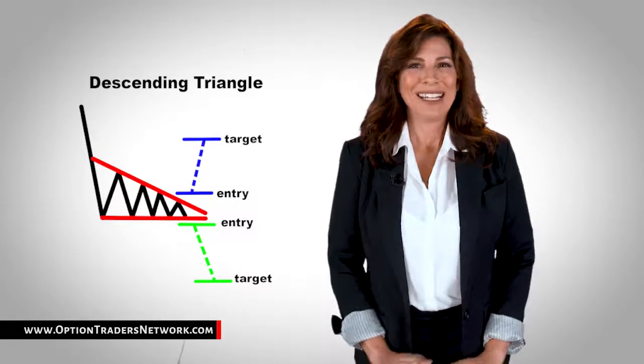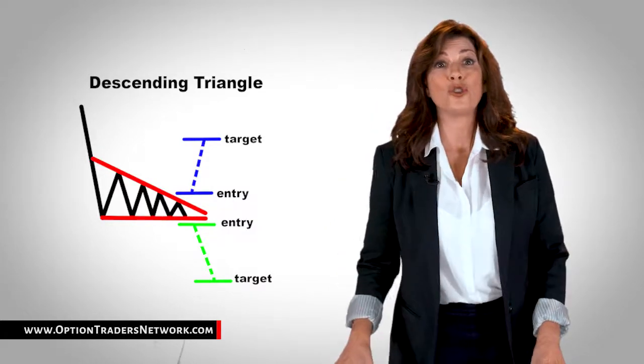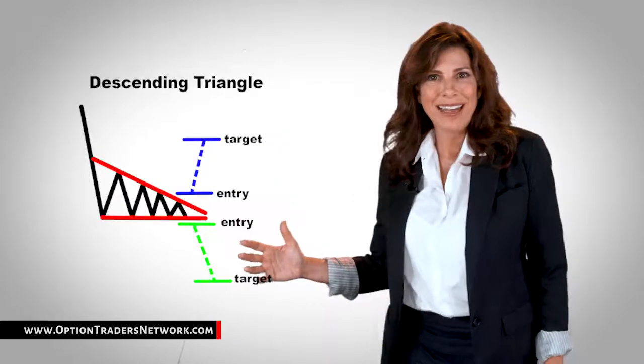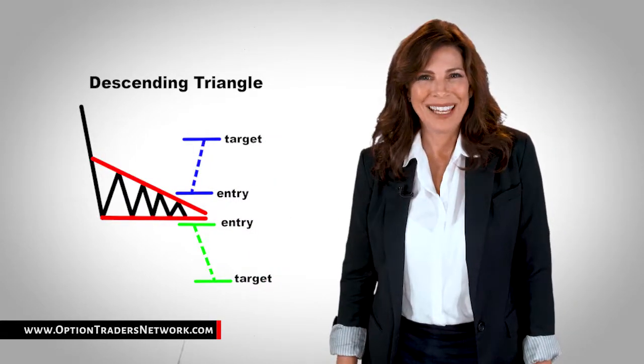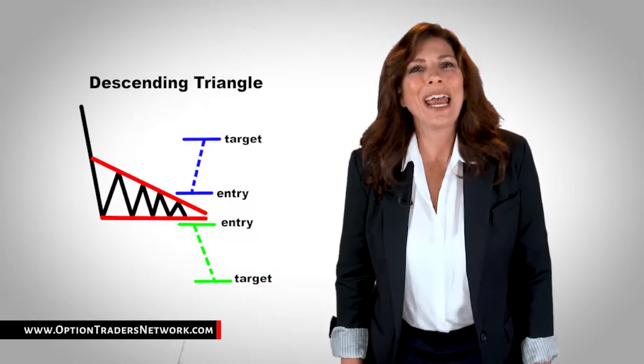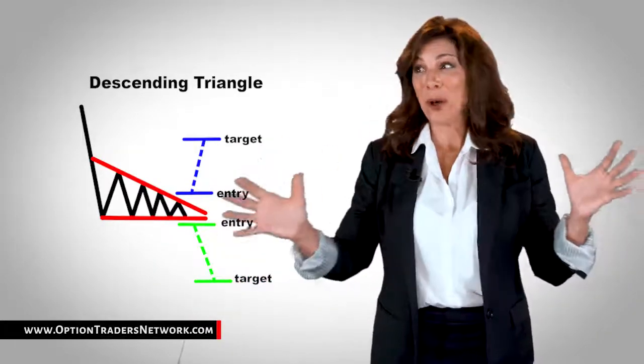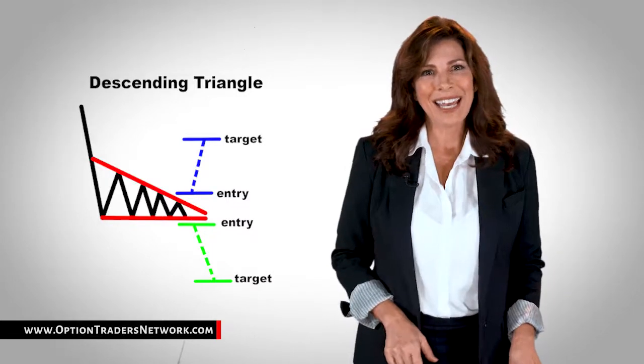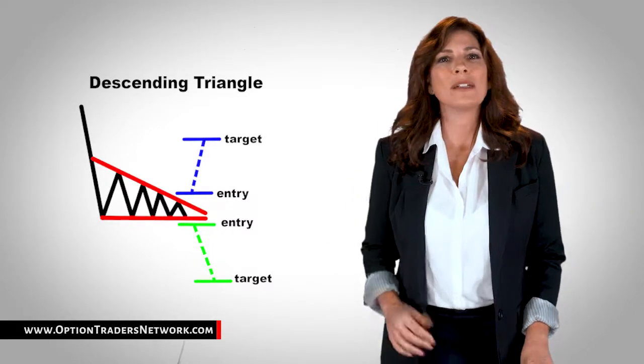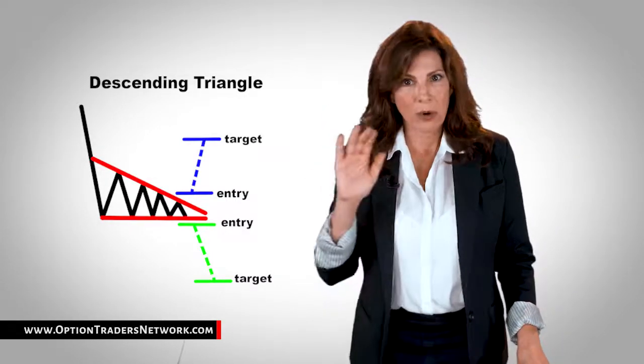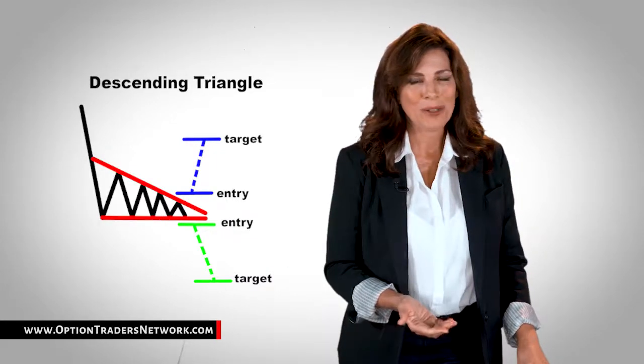However, in some cases, the support line will be too strong and the price will bounce off of it and make a strong move up. The good news is that we don't care where the price goes. We just know that it's about to go somewhere. In this case, we would place entry orders above the upper line, the lower highs, and below the support line.